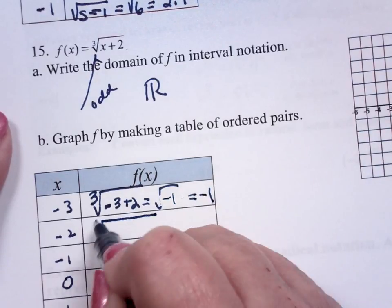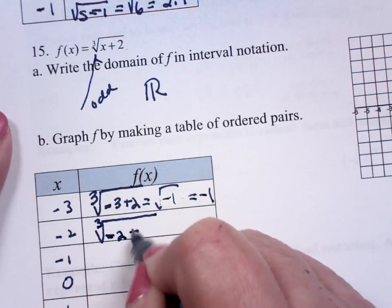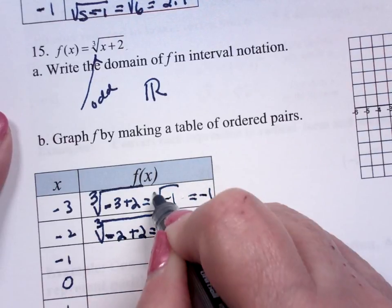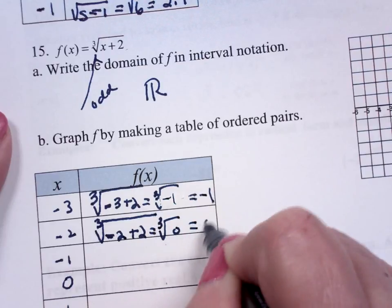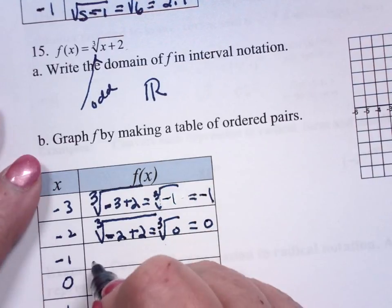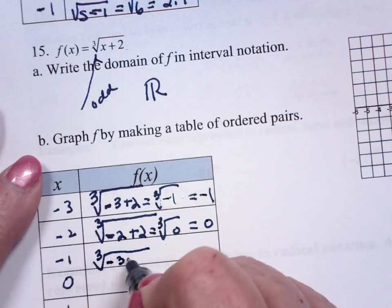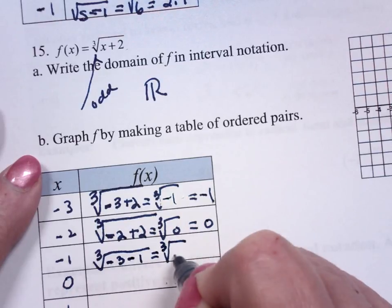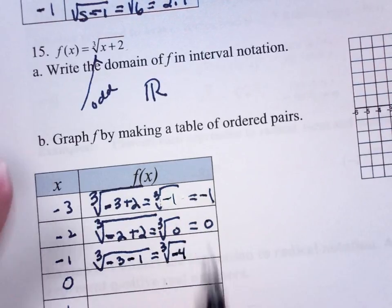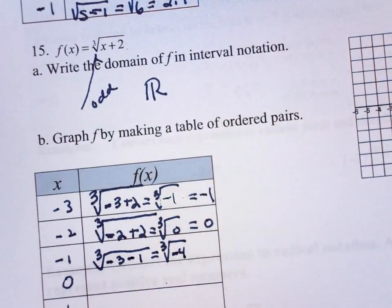This is the cube root of negative 2 plus 2, so far easy peasy. This is the cube root of negative 3, negative 1, which is the cube root of negative 4. And now we have to revert to our calculators. Why is that negative 3? It has to be negative 1.